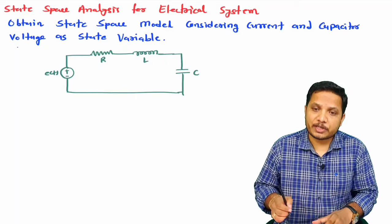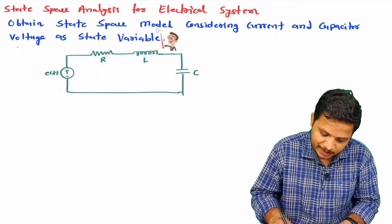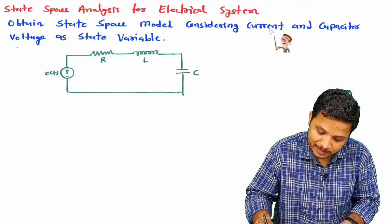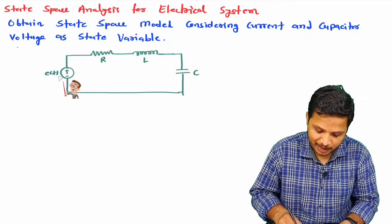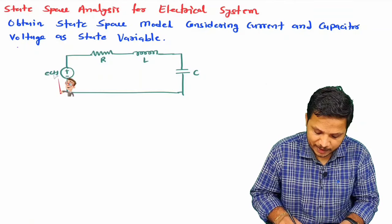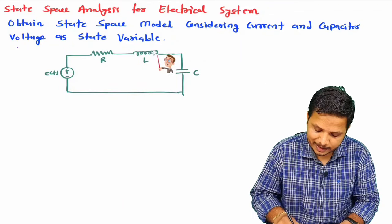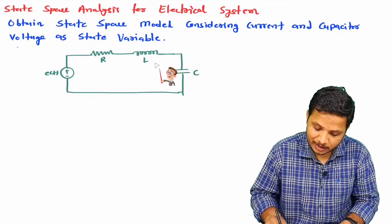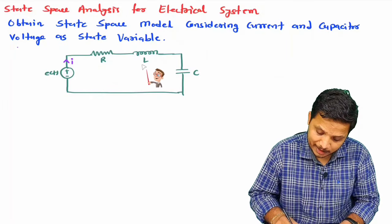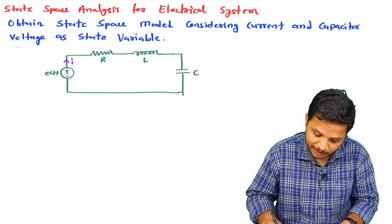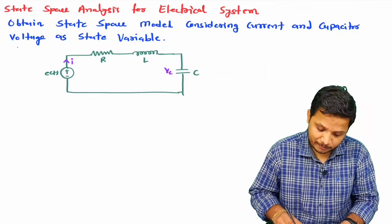Let us see the question first. We are required to obtain a state space model considering current and capacitor voltage as state variables. Here E(t) is our supply and an RLC circuit is connected. We are required to consider current I and capacitor voltage Vc as state variables.